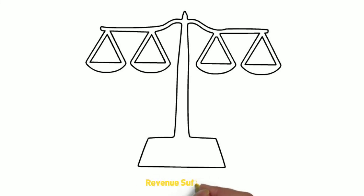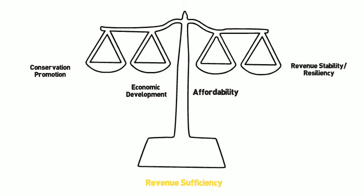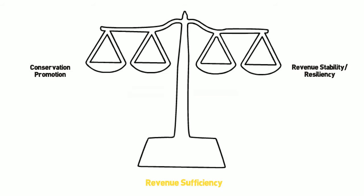When it comes to designing rate structures and setting rates, utilities usually have to balance multiple objectives. First and foremost, utilities must set rates to collect the revenue they need to operate the water utility and invest in their infrastructure. After that, utilities can and do tweak and tailor the rate structure to meet a number of objectives, including customer affordability, economic development, water conservation, and revenue stability. And this is where it can get a little complicated — some of these objectives can come in direct conflict with one another, and even sometimes with the primary objective of balancing the budget.